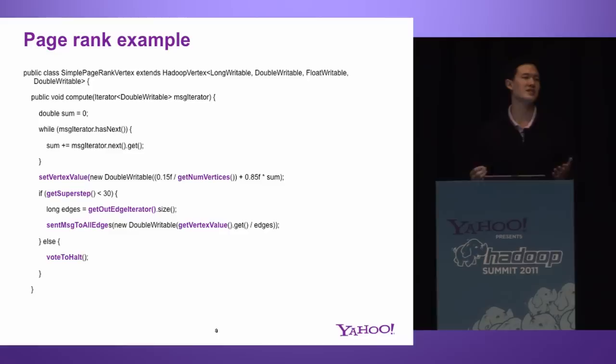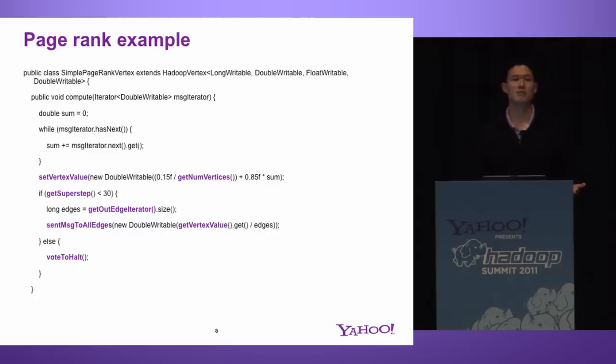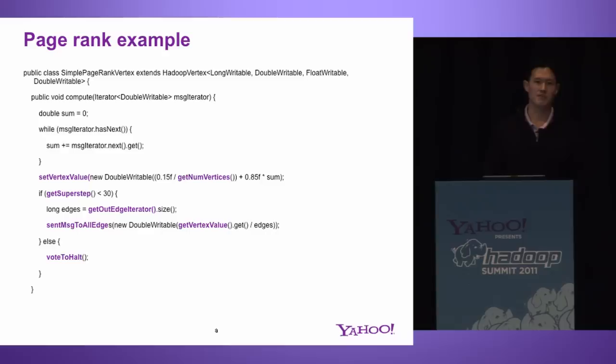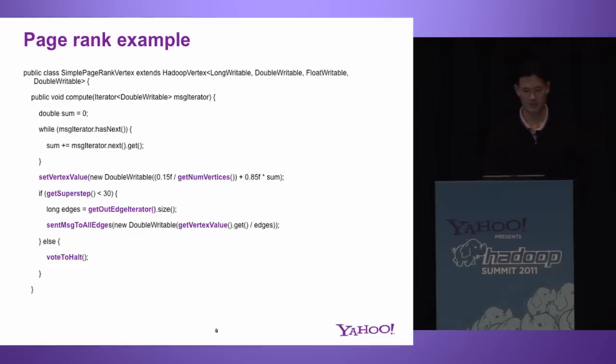It's best to illustrate why a vertex-centric API is nice for iterative graph computation with an example. The highlighted purple methods are provided by the API. Here we have an example of PageRank: you load your data using a vertex input format with initial page rank values, sum up the incoming page ranks from your in-links, do some calculation to set your value with a contribution, then send a distributed value across your edges. In this case, we have a simple ending condition — once you've passed 30 super steps, you can vote to halt.